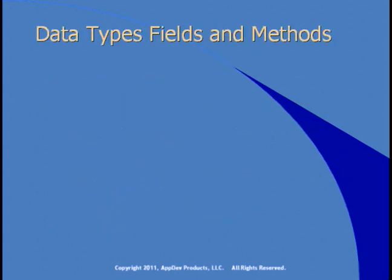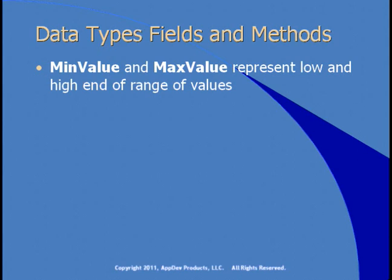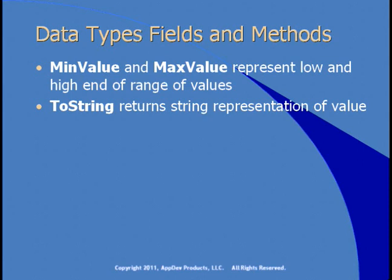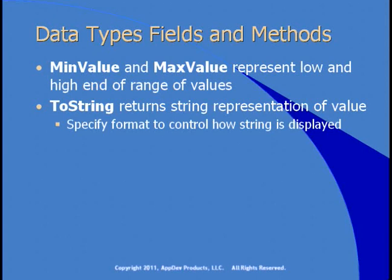Data types are based on structures in the .NET framework, and a structure is a type of class. Because data types are based on structures, they have fields and methods you can use in your code. For example, data types provide MinValue and MaxValue fields representing the low and high ends of the range of values. You can also use the ToString method, which returns a string representation of a value, letting you specify how it's displayed — for instance, with commas separating the thousands. Most data types have MinValue, MaxValue, and ToString.